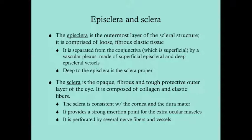Deep to the episclera is the sclera proper. The sclera is opaque, fibrous, and tough. It's made up of type 1 collagen fibers that organize very irregularly — in contrast to the cornea, where collagen fibers are very well organized, allowing you to see through it. The sclera's irregular collagen arrangement makes it appear white and opaque. The sclera is also continuous with the cornea anteriorly and with the dura mater of cranial nerve 2 posteriorly.